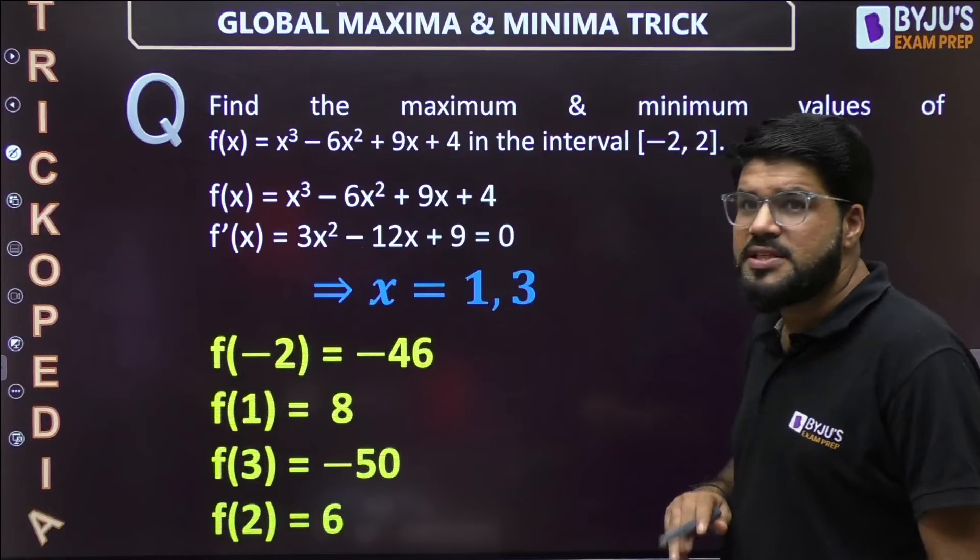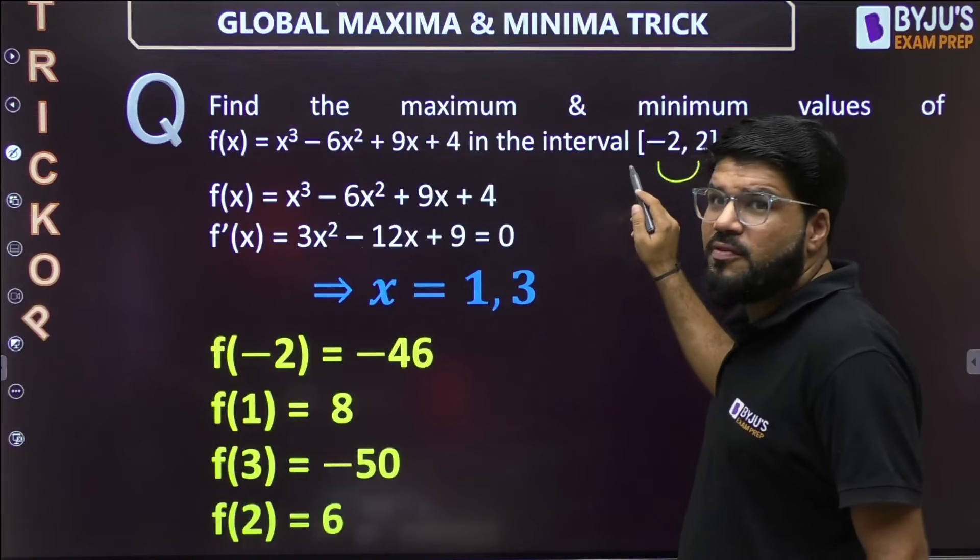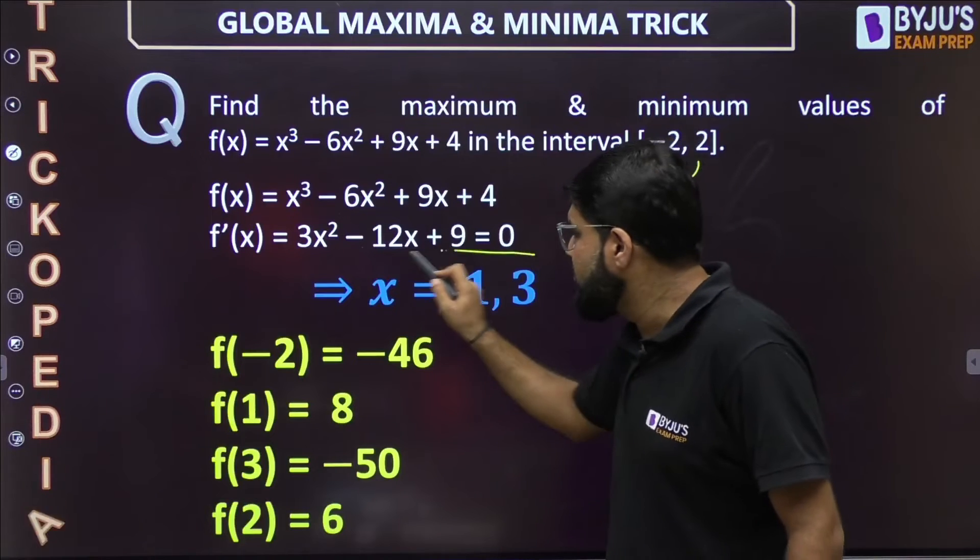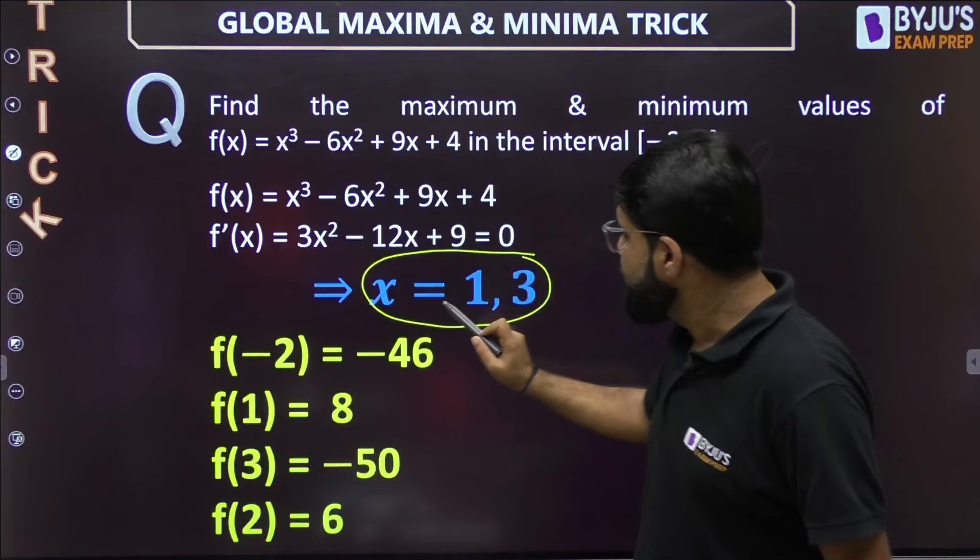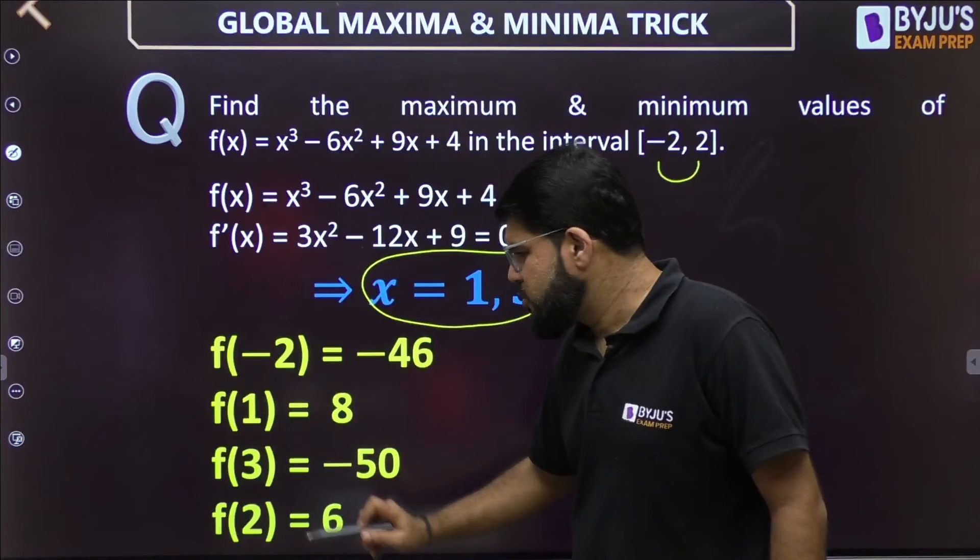Now calculate the value at the stationary points. There is one catch here. At the end points, calculate the value of the function at the end points, calculate the value of the function at the stationary points. That is f(-2), f(1), f(2), and f(3). You can slide it also.